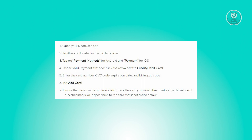Now if you have multiple cards linked in your account, you can set one as the default card for future transactions. Simply click on the card you wish to designate as default. Upon selection, a checkmark will appear next to the chosen card, indicating it as the default payment method. And that's about it.